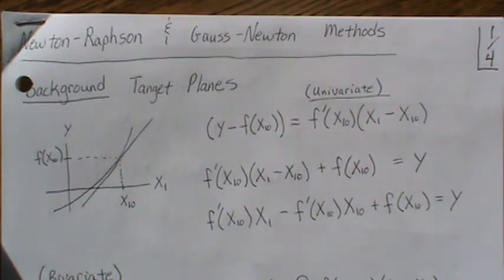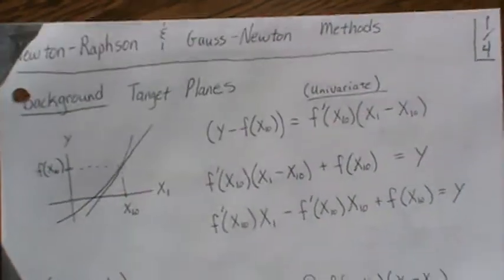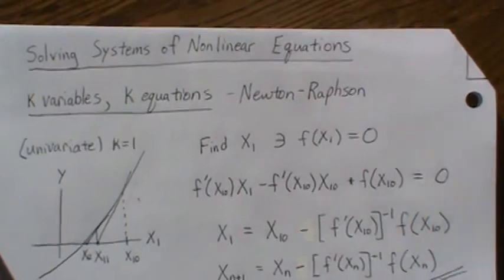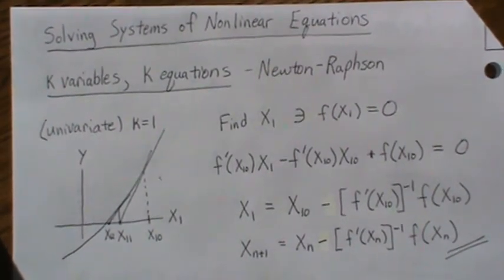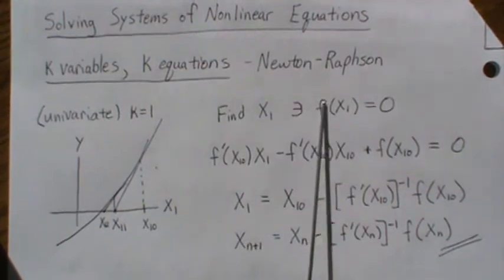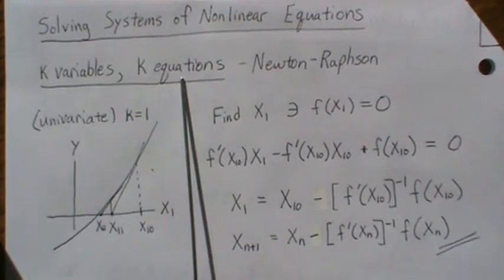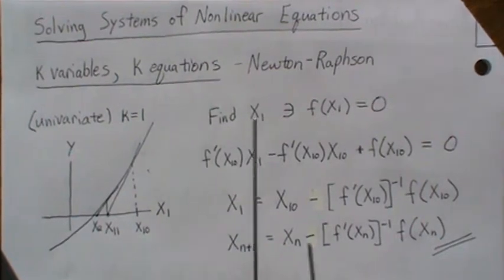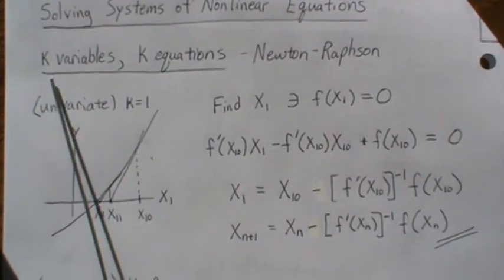In this video we look at the Newton-Raphson and the Gauss-Newton methods for solving systems of nonlinear equations. In part one we went through and found how to find a tangent line or a tangent plane in multi-dimensions. So we're going to jump right into the Newton-Raphson method. The Newton-Raphson method is: you have k variables, unknown variables, and k equations, and this method is an iterative method that helps find the solutions to our variables.